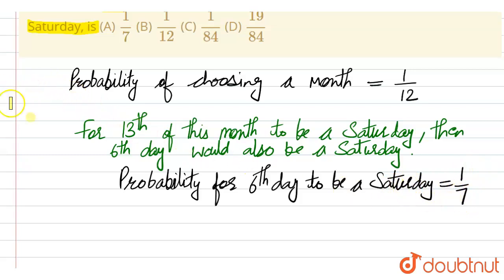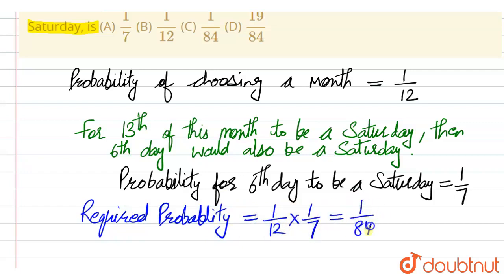Probability is 1 by 7. So required probability would be the product of these two probabilities. Required probability is equal to 1 by 12 into 1 by 7, which is equal to 1 by 84.